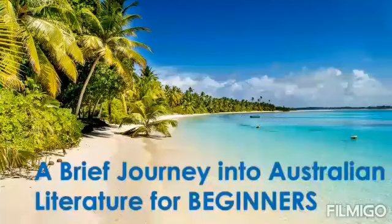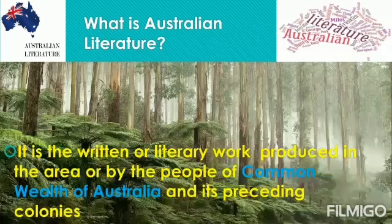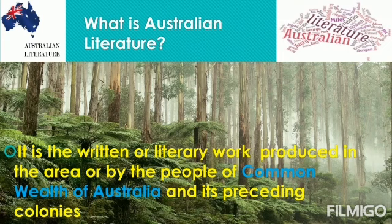A Brief Journey into Australian Literature for Beginners. Australian Literature is the written or literary work produced in the area or by the people of the Commonwealth of Australia and its preceding colonies. The Commonwealth of Australia is a country comprising the mainland of the Australian continent and numerous smaller islands. So in simple terms, any literary work of art produced in Australia is said to be Australian Literature.